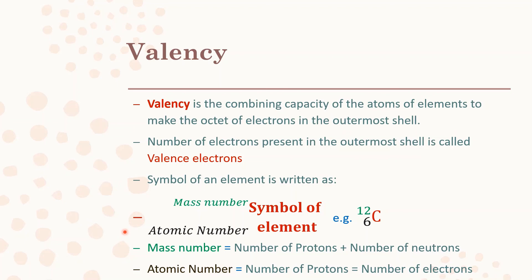Now we will see how to write a symbol for an element. For carbon, write the symbol C. The number 12 represents the mass number and 6 represents the atomic number. Mass number is the number of protons plus neutrons; atomic number is the number of protons, which is also equal to the number of electrons. This is how you write the symbol for an element.